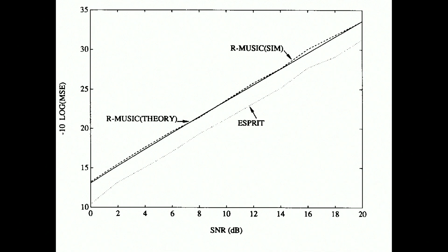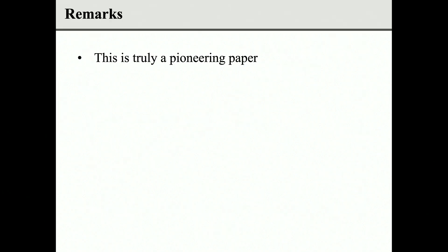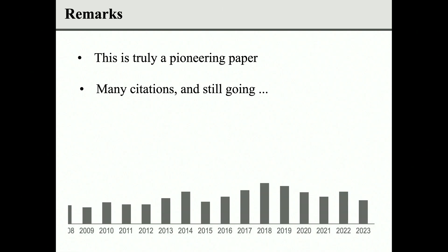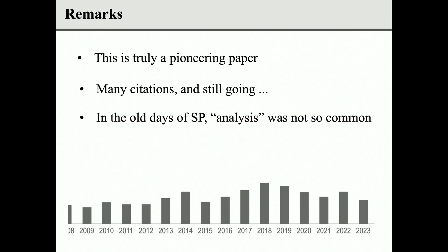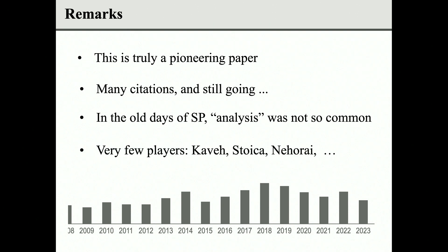The remarkable agreement between theory and experiments — in those days I do not know how long it took them — is amazing. And as the curve goes up, it does not mean the error is increasing; it is decreasing because of the minus sign in the ordinate. This is truly a pioneering paper with many citations. If you go to Google Scholar, you will see this is a top-cited paper from Bhaskar's school. Even in 2023 the paper is still getting significant citations. In those days, analysis was not so common — very few pioneers like Moskvave, Bhaskar, Stoica, and Nehorai were doing this.